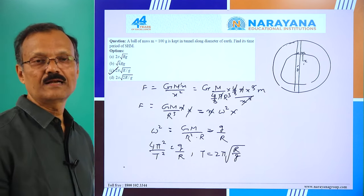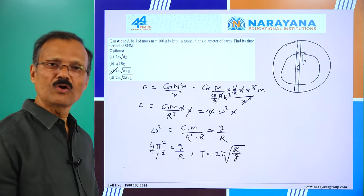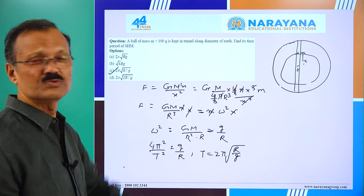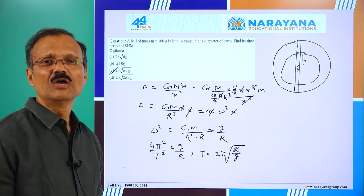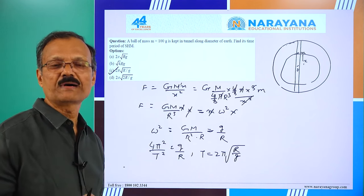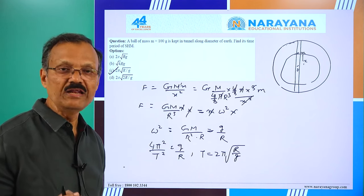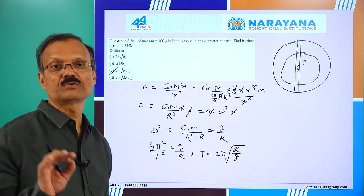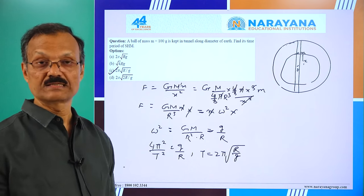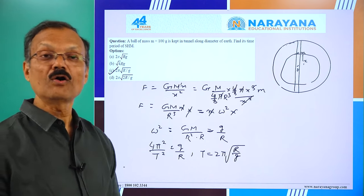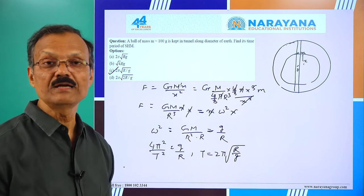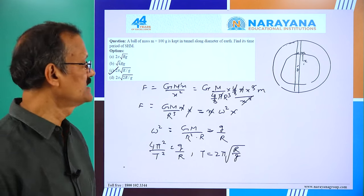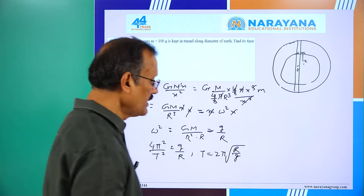Not only the tunnel passing through the center, but any tunnel from one side of the Earth to the other will always give the same time period of 2π√(R/G).